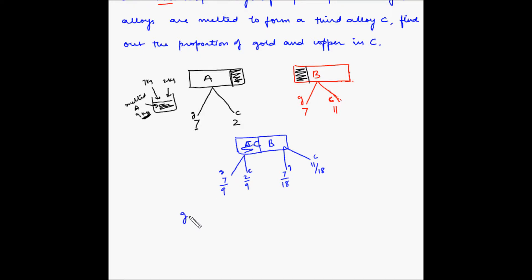In C, how much is gold? 7 by 9 plus 7 by 18. And how much is copper? 2 by 9 plus 11 by 18.